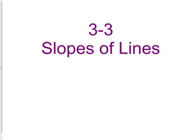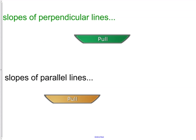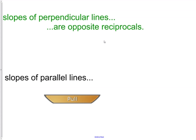The final piece to our discussion of slopes of lines is slopes of perpendicular and parallel lines. The slopes of perpendicular lines are opposite reciprocals. The slopes of parallel lines are equal.